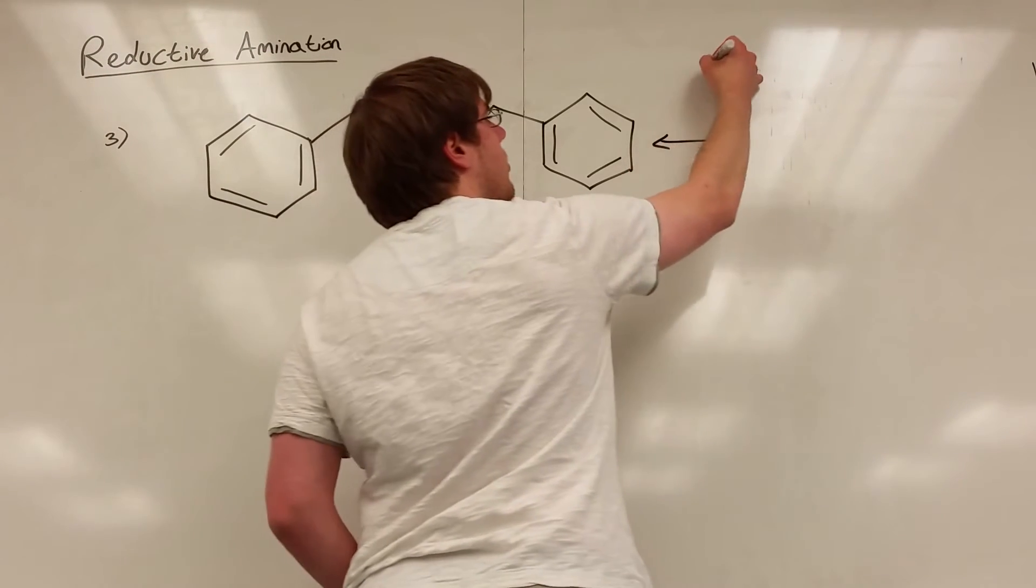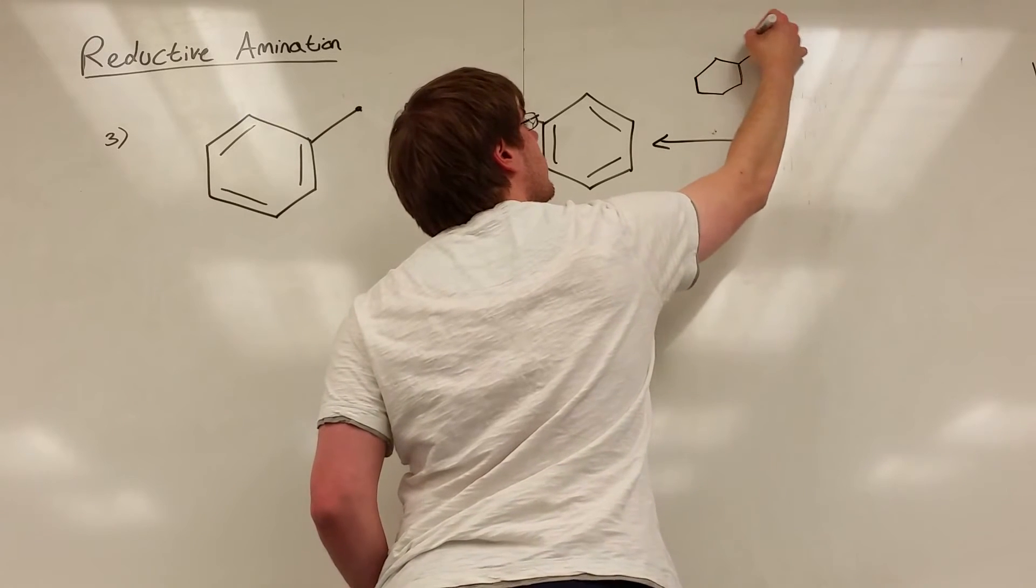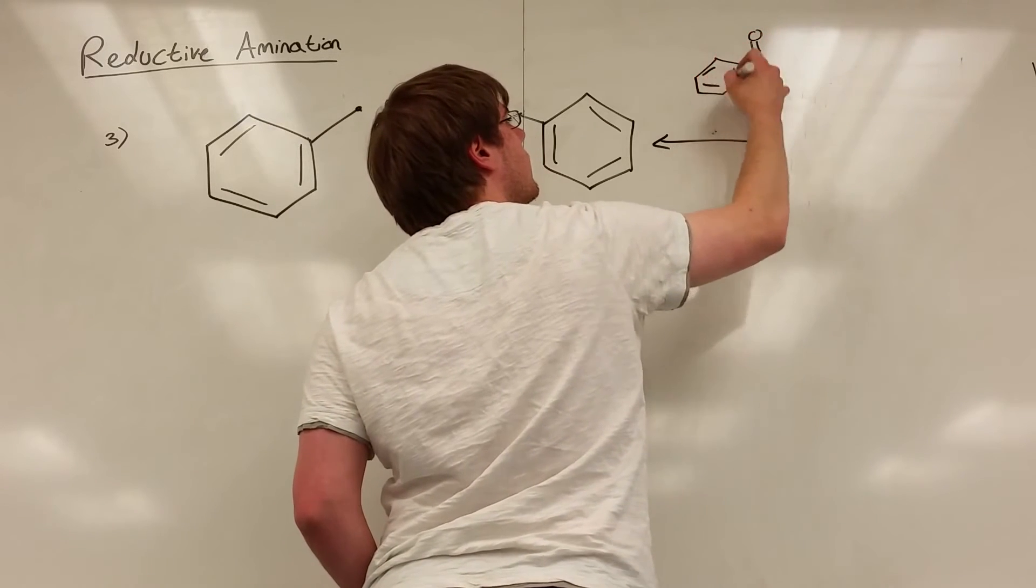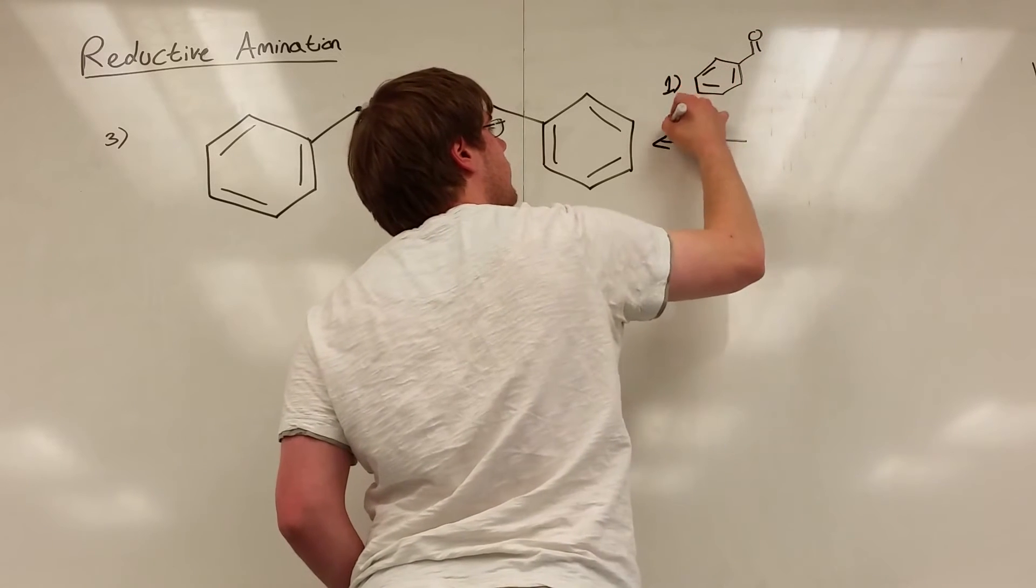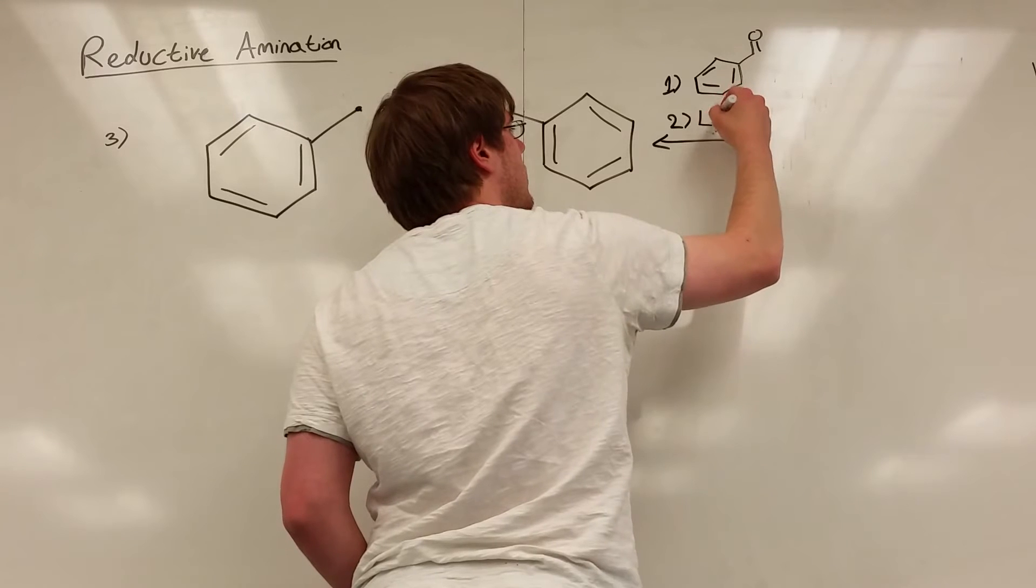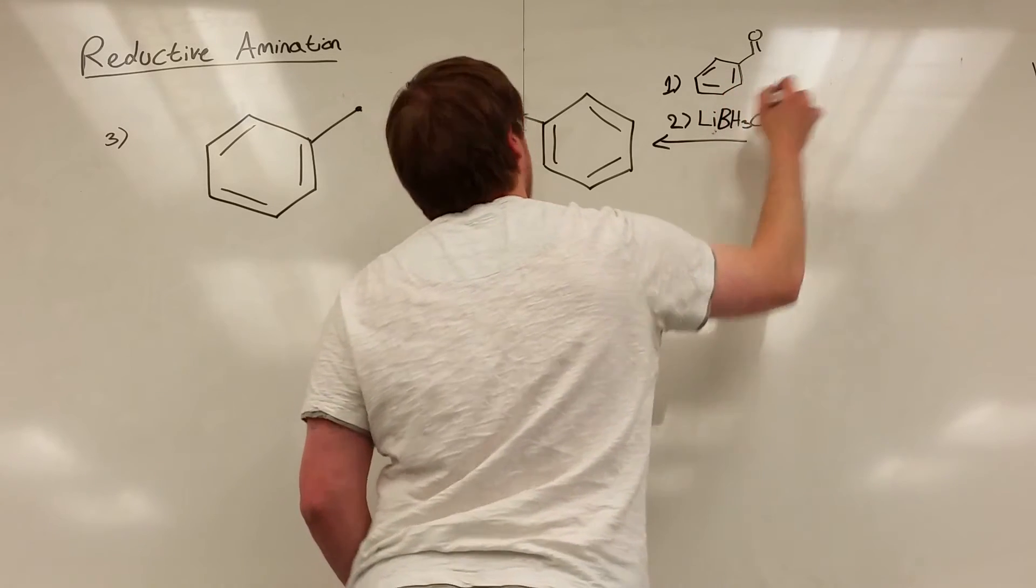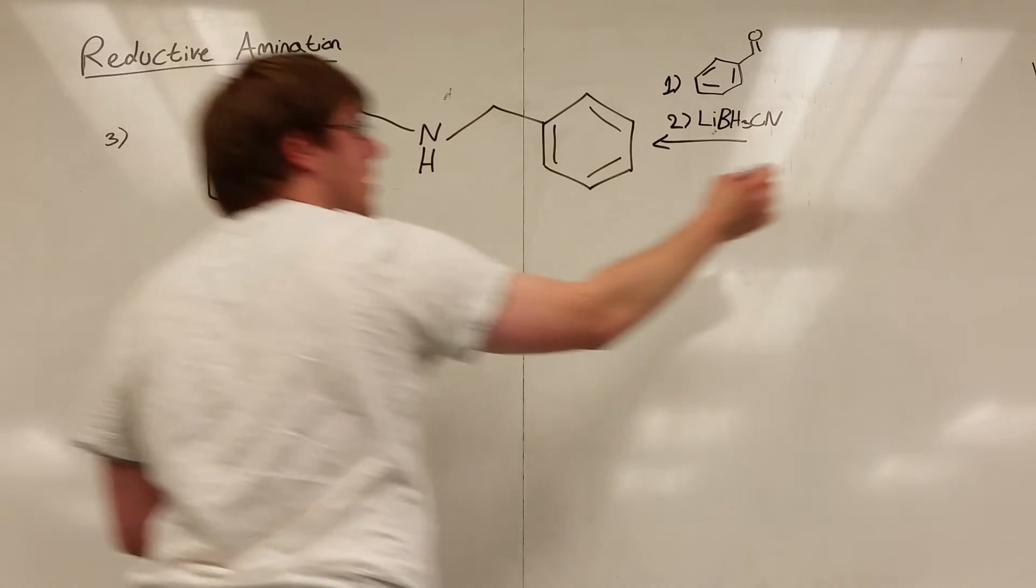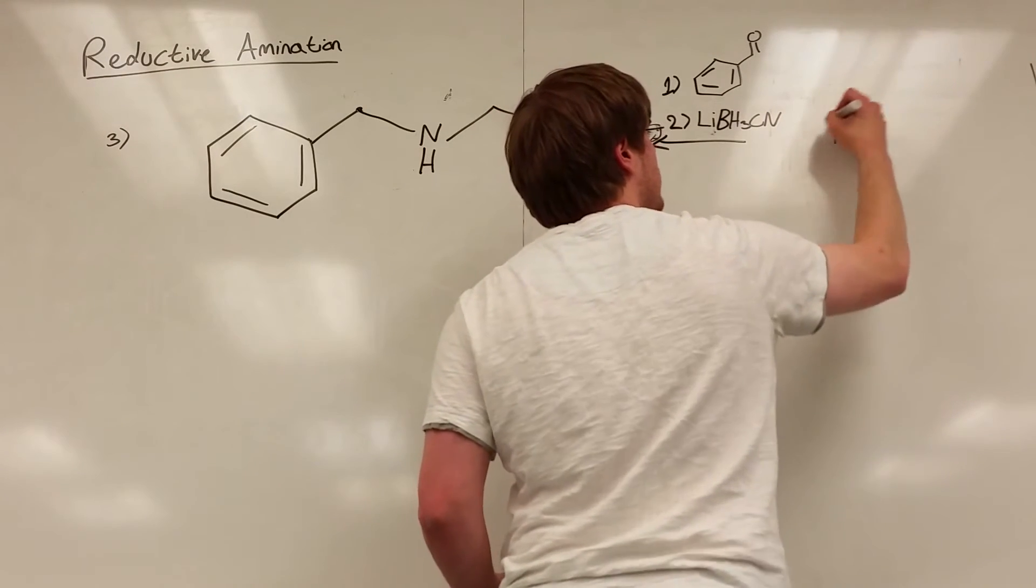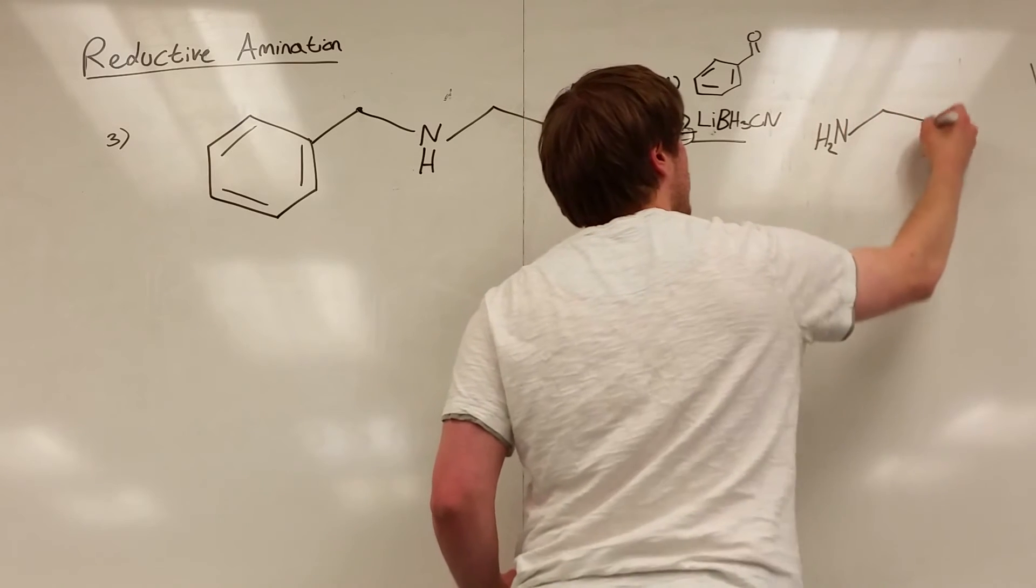So I'm going to put the C double bond O ring over the arrow. We have that. Drawing it kind of small just so I can fit it. Hopefully it's visible on the camera. And then step two would still be my NaBH3CN or my LiBH3CN.